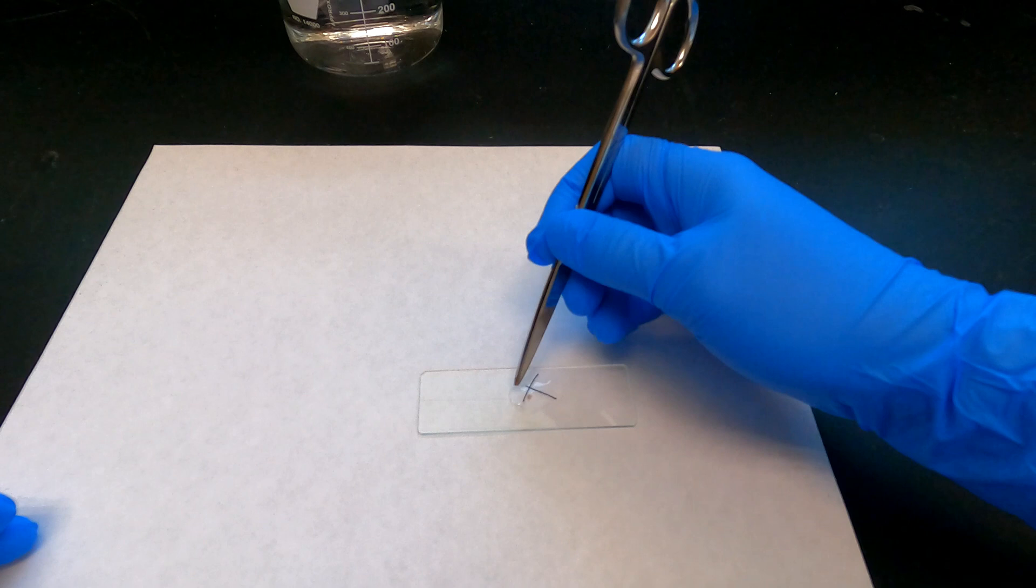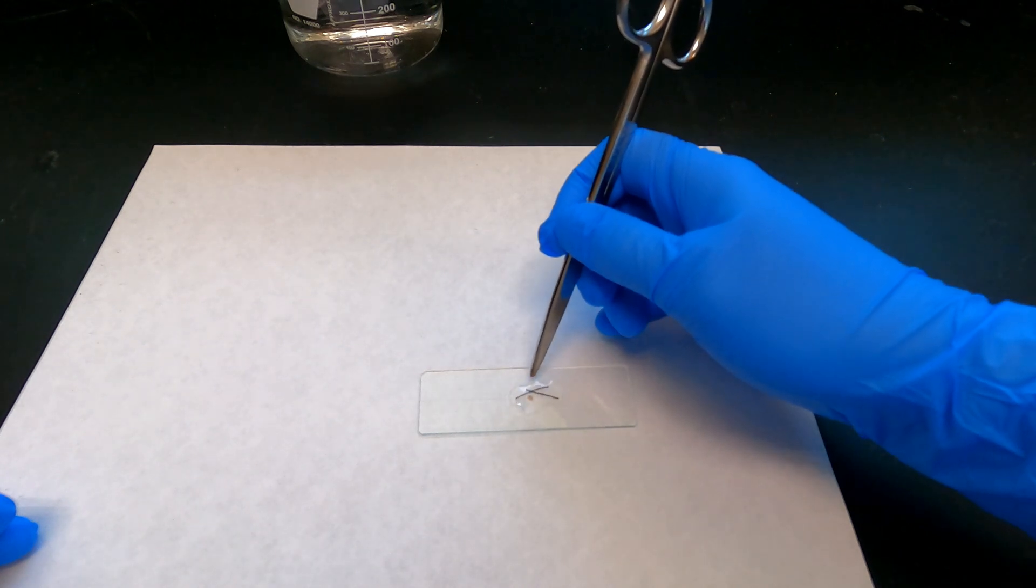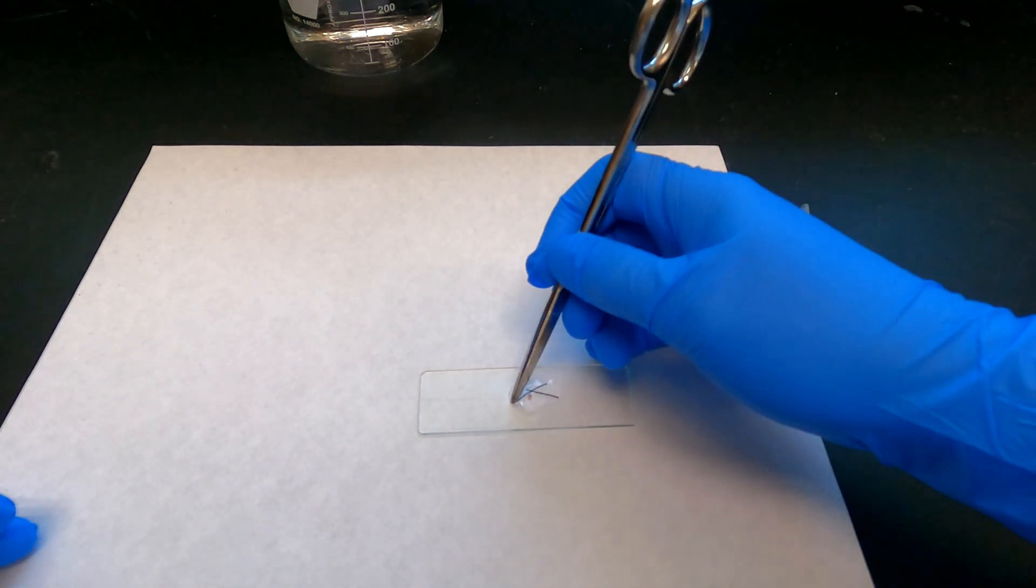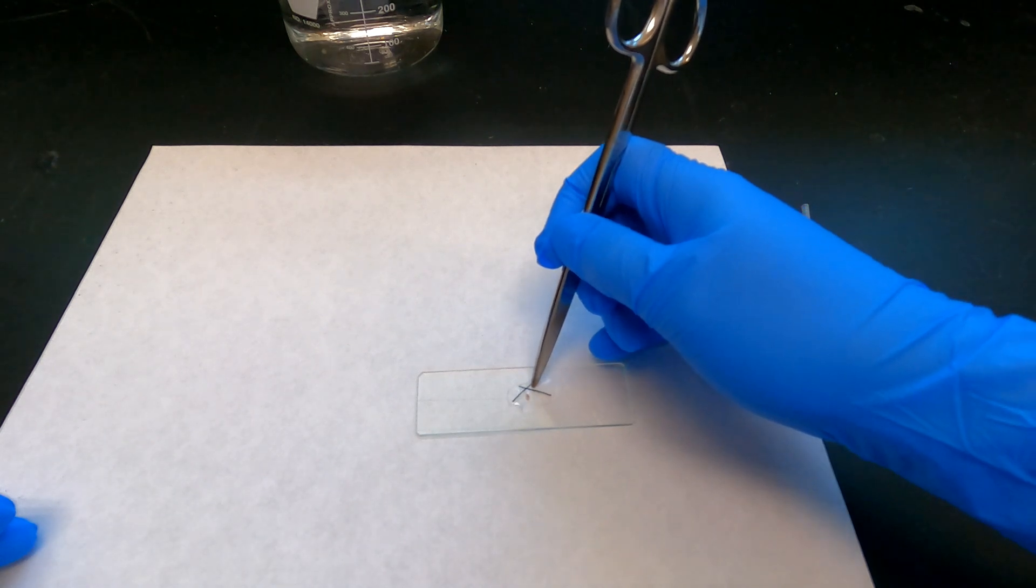You can use a pair of scissors or a micropipette tip to arrange the threads around the Daphnia, making the triangle smaller and smaller to give the Daphnia less and less space to move around.